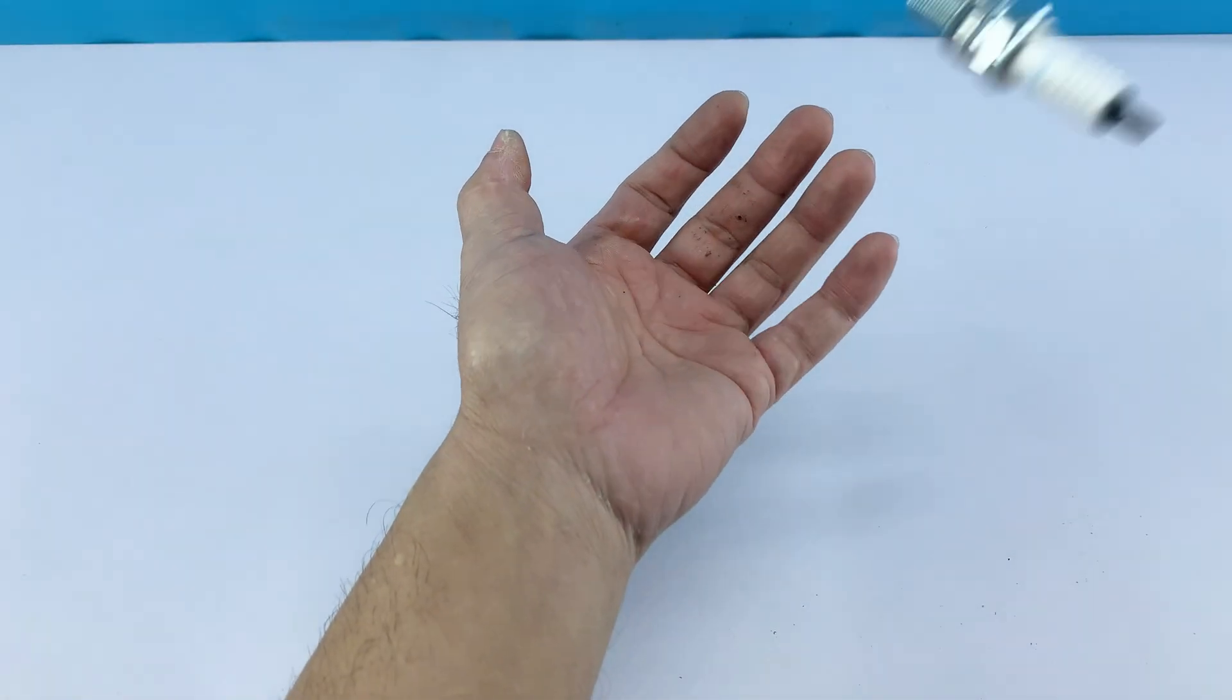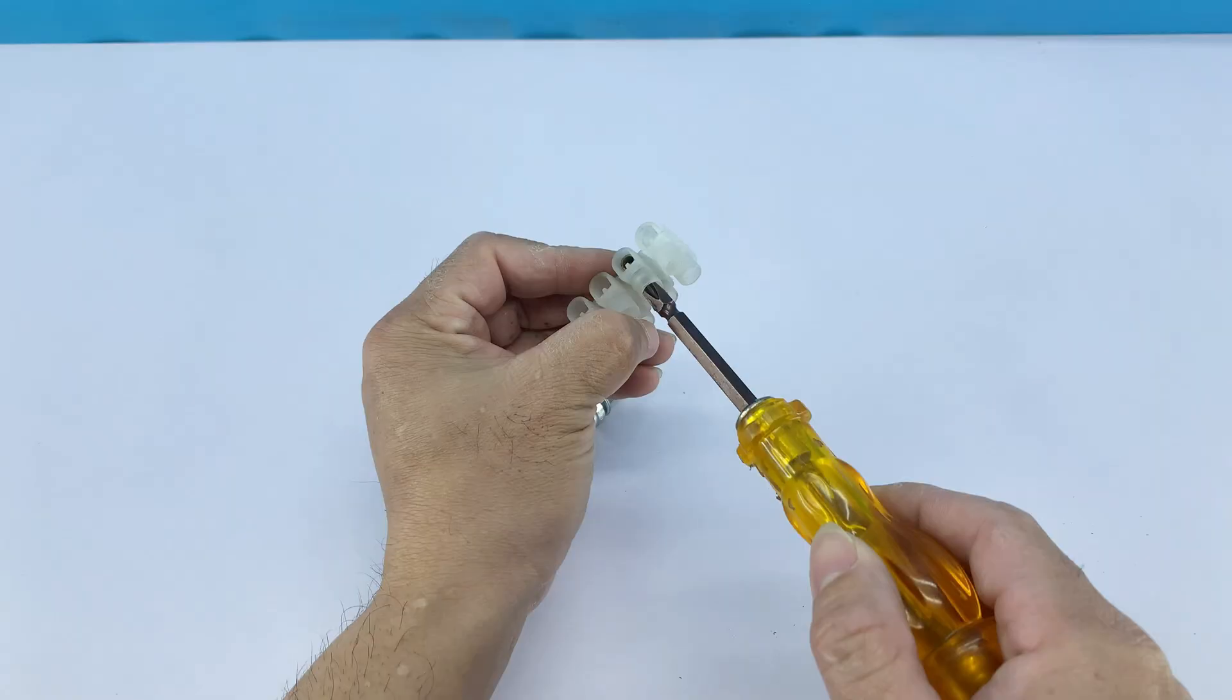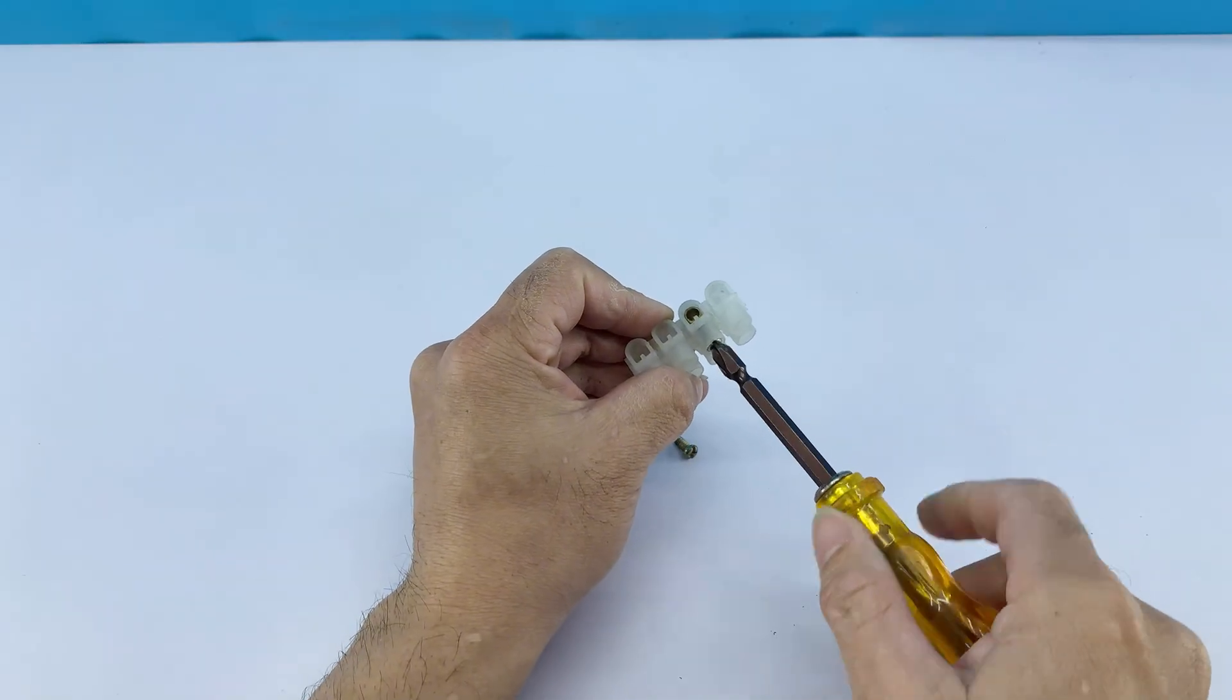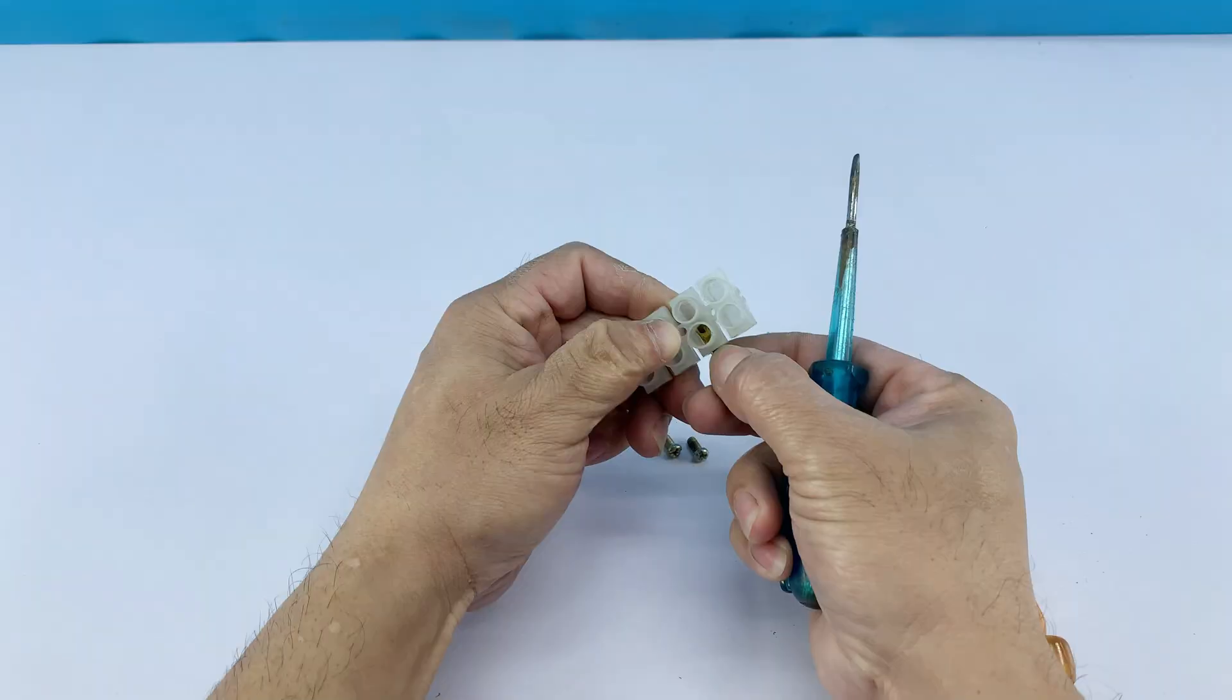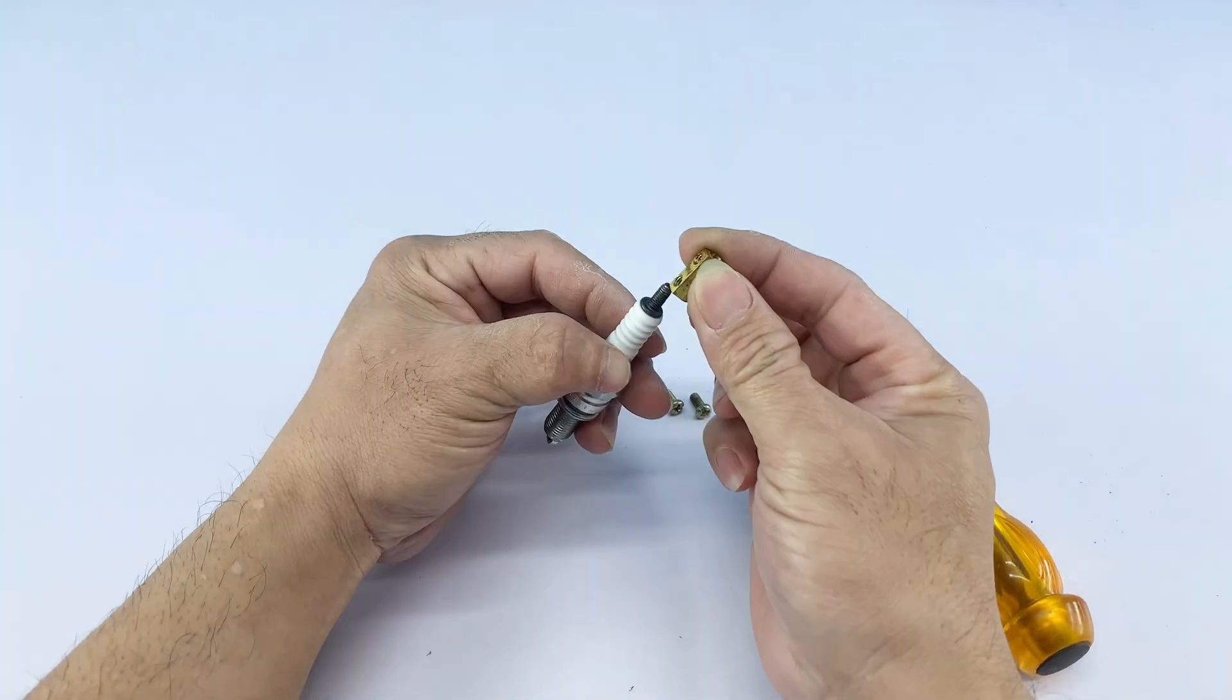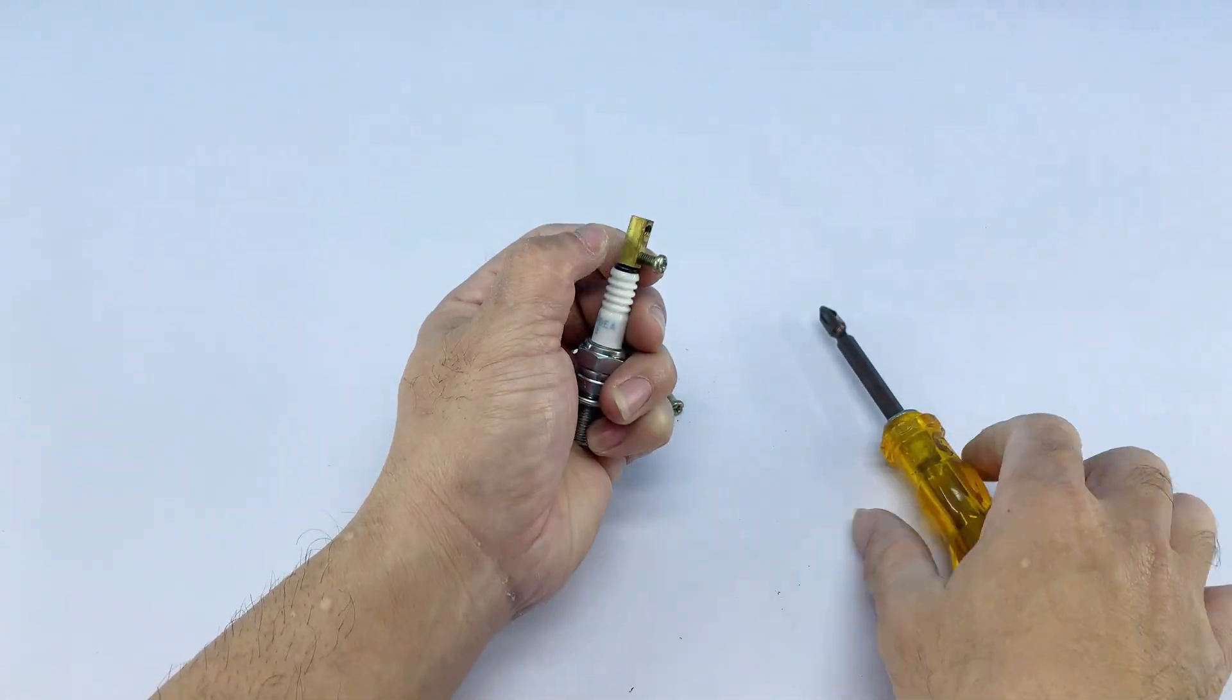Now, let's prepare the heating element. I'm starting with a spark plug. Next, I disassemble a small electrical terminal block to extract these brass connector pieces. These will serve as our primary contact points, so I attach them securely to the spark plug using their tiny screws. This ensures a robust electrical connection.